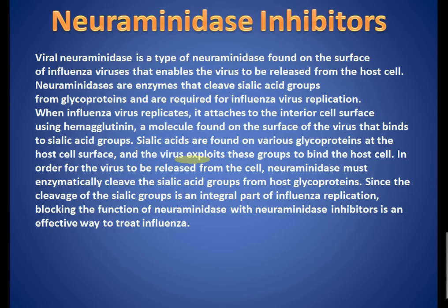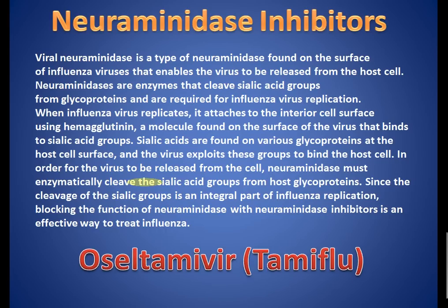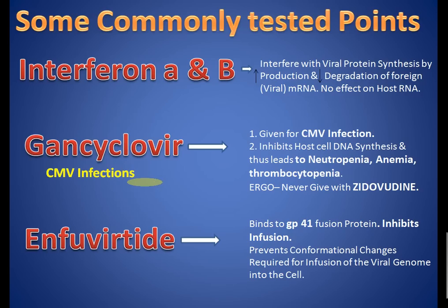Neuraminidase inhibitors work by binding to sialic acid residues on the host cell surface, cleaving those residues, and helping in the release of virion particles out of the cell. Oseltamivir is the most commonly tested drug in this class — also called Tamiflu — and zanamivir also appears in questions. These drugs are useful for both prevention and treatment of influenza A and B.